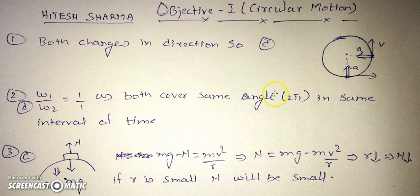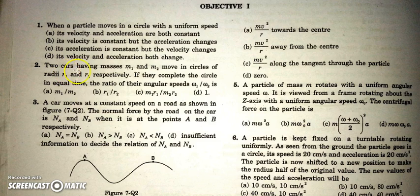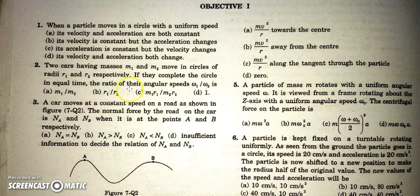When it reaches the top, velocity is upward and acceleration is towards the left — again towards the center. Both are changing direction, so both are varying. In the next question, there are two cars of masses m1 and m2 moving in circles with radii r1 and r2. If they complete the circle in equal time, their angular speeds will be the same, so their ratio will be one.